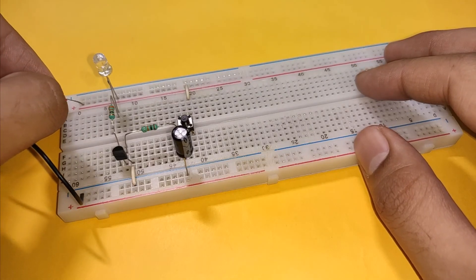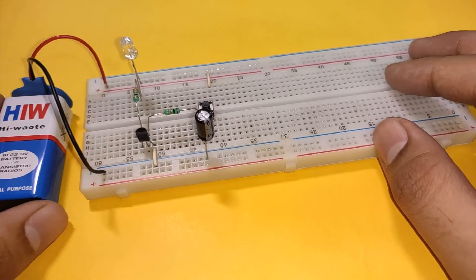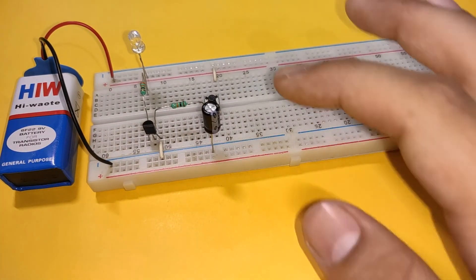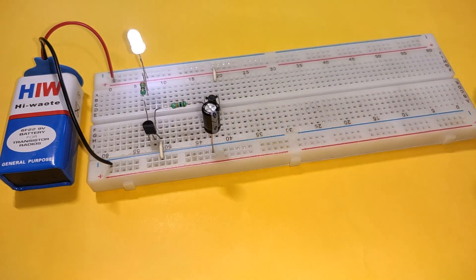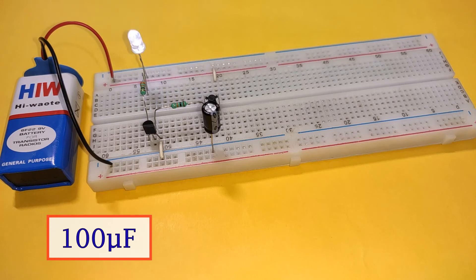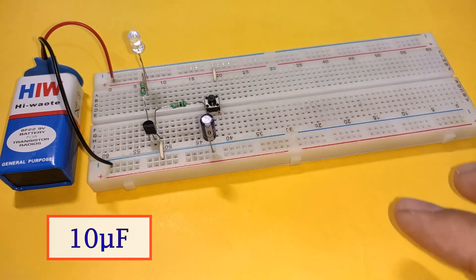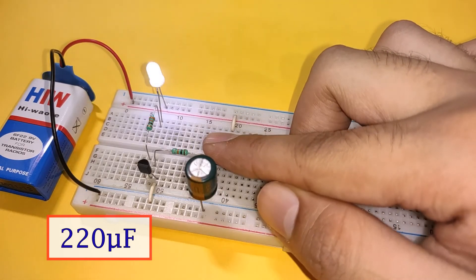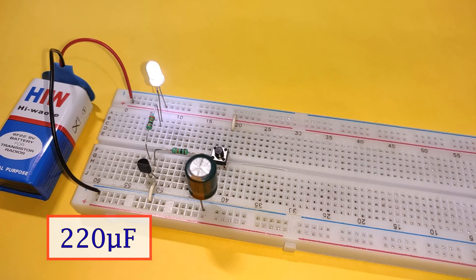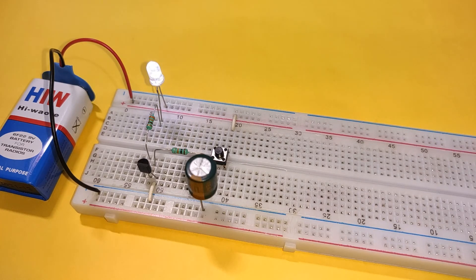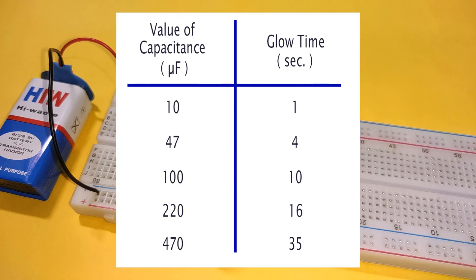Finally, connect the power supply. With this, our circuit is complete. Pushing the momentary switch turns the LED on for some time, after which it fades off automatically. Here also, you can decrease or increase the glow time by changing the value of capacitance. You can refer to this table to see the relationship between the capacitance and the glow time.